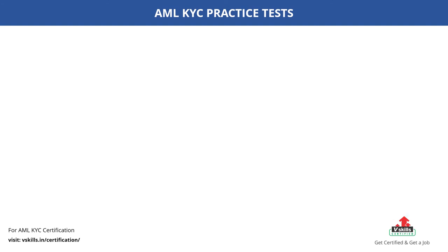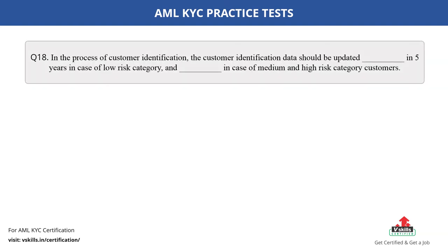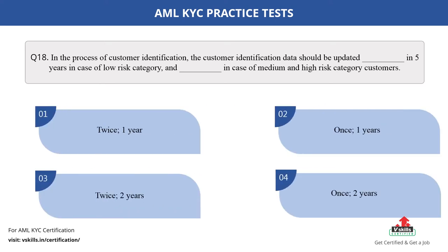Question number 18. In the process of customer identification, the customer identification data should be updated dash in five years in case of low risk category, and dash in case of medium and high risk category customers. Fill in the blank. The options are: A. Twice, one year; B. Once, one year; C. Twice, two years; D. [option D]. The correct answer is option D.